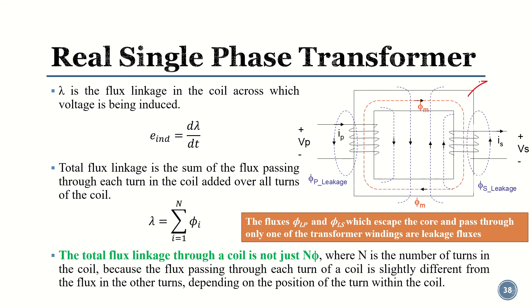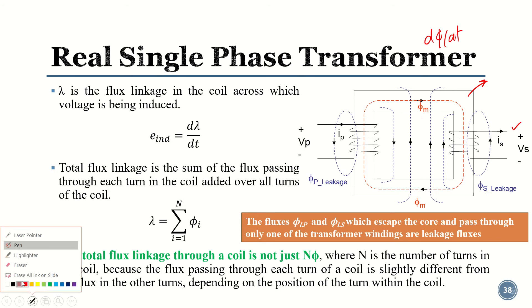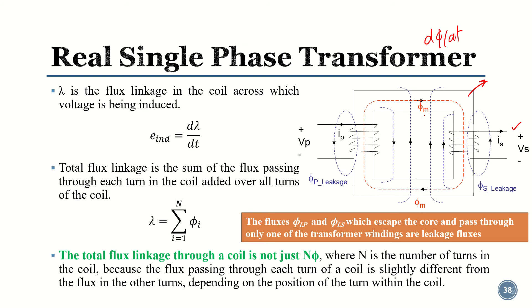Inside the transformer we have a core, and due to the primary current the flux is generated. The rate of change of that flux induces the voltage in the secondary side. In an actual transformer, we have two kinds of fluxes: phi_m, which is the mutual flux between the primary and secondary side, and some flux which is outside the core, called the leakage flux.